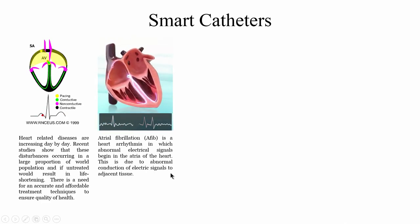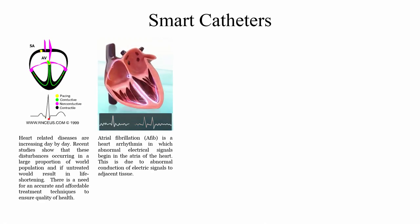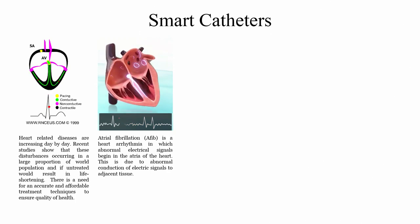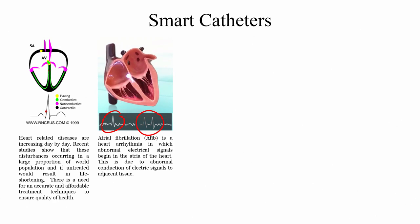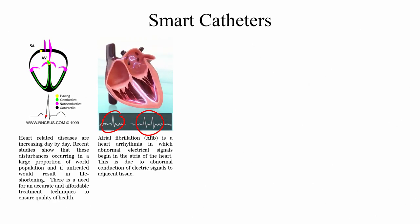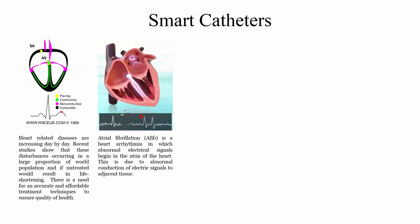We are talking about AFib, or atrial fibrillation, which is a heart arrhythmia in which abnormal electrical signals begin in the atria of the heart due to abnormal conduction. If you see this ECG waveform, in the circled area you will see a sudden heartbeat with a QRS wave. There are two very closely spaced ECG signals compared to how it should normally look — this is because of the misfiring of the signal.